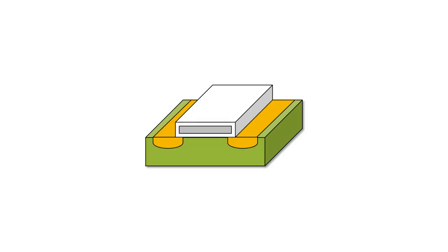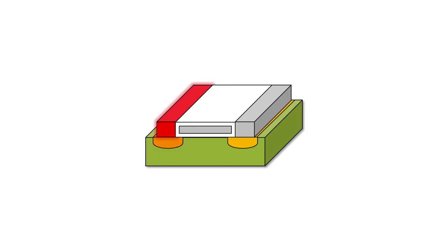For electricity to flow through the conducting channel between the yellow areas, there must be a source and a drain — in other words, an input and an output. These are both made from conductors as well, like metal. If the input is charged, it cannot flow to the output unless the gate, which is the piece of metal in the middle, is also charged. When the gate is charged, it opens up the conducting channel in the semiconductor, allowing electricity to flow down through the source, over to the other side of the semiconductor, and back up out the drain.